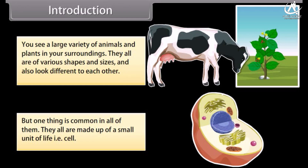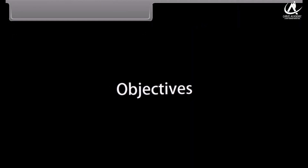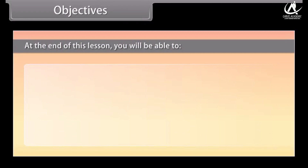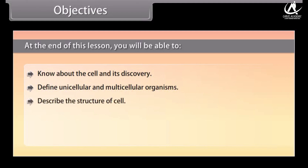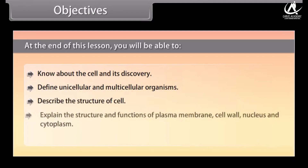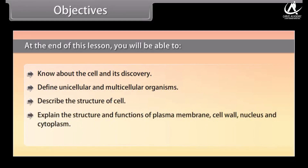Objectives: At the end of this lesson you will be able to know about the cell and its discovery, define unicellular and multicellular organisms, describe the structure of a cell, and explain the structure and functions of plasma membrane, cell wall, nucleus, and cytoplasm.